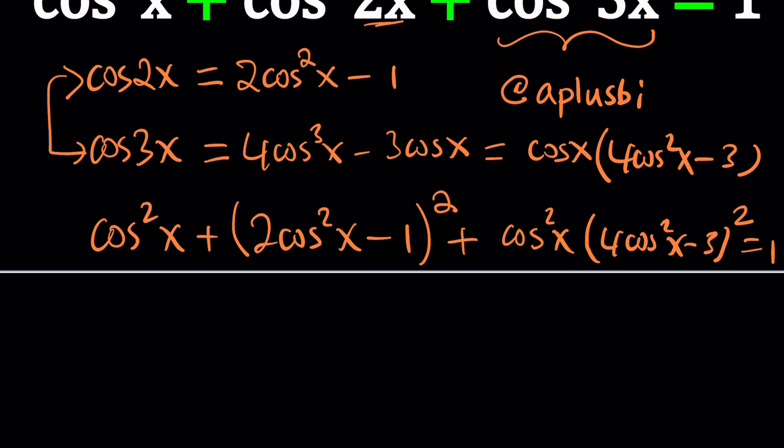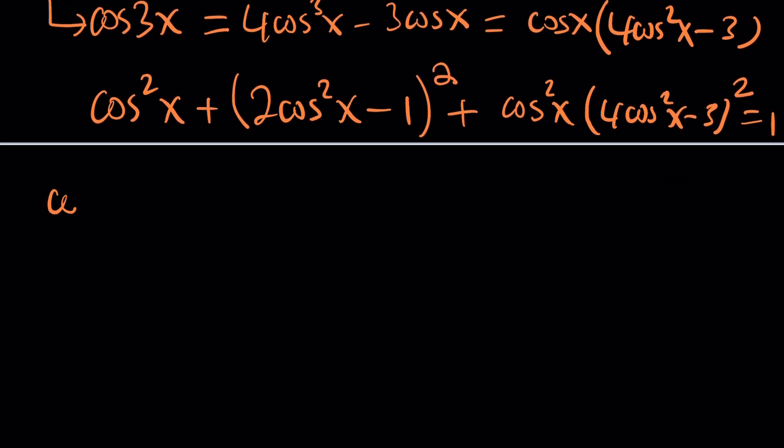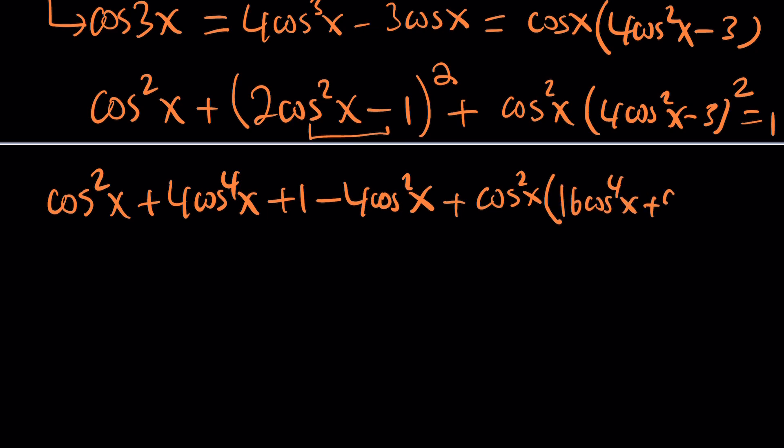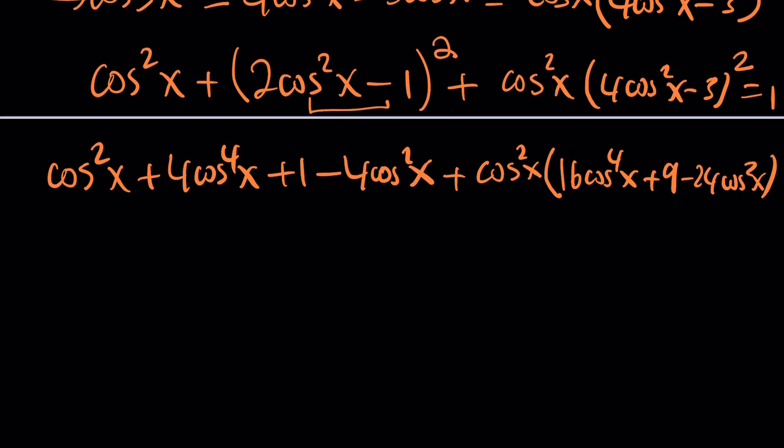So what we need to do next is expand and simplify everything. We're going to get cosine squared of x plus 4 times cosine to the fourth power of x, plus 1, then minus 4 cosine squared of x. And then we have 16 times cosine to the fourth plus 9 minus 24 times cosine squared of x, and the whole thing equals 1.